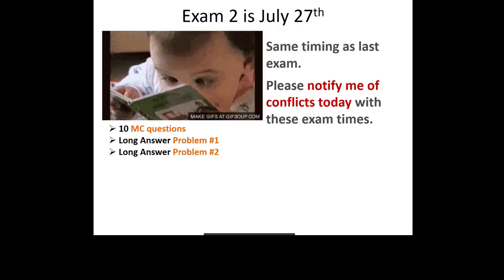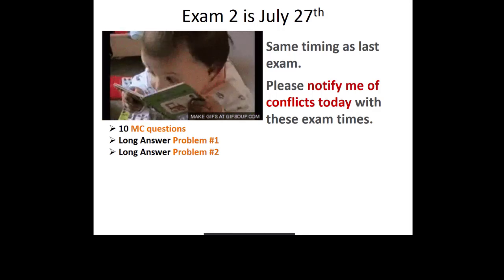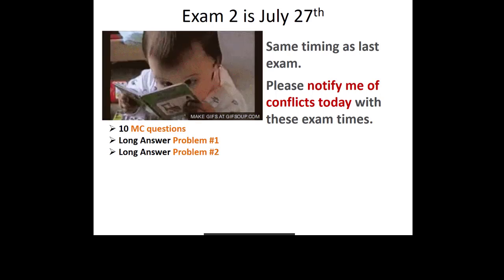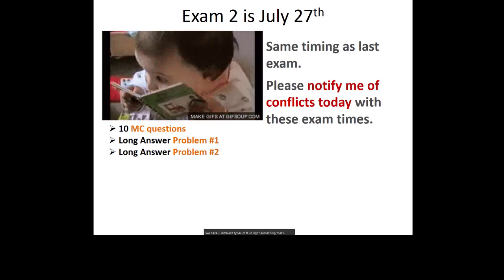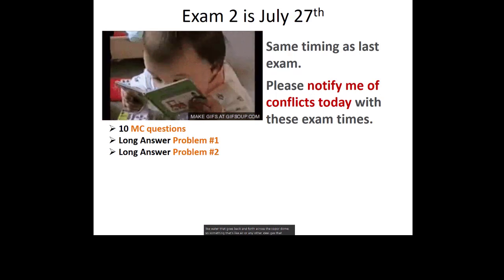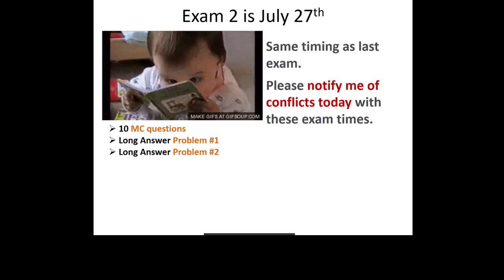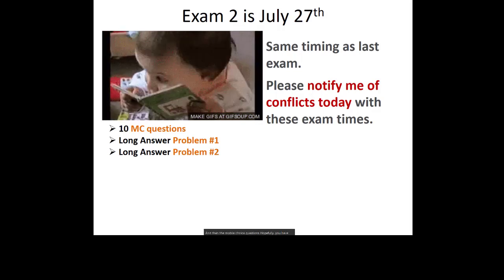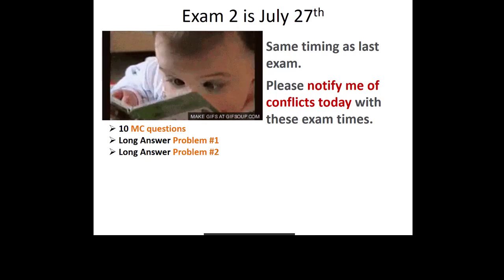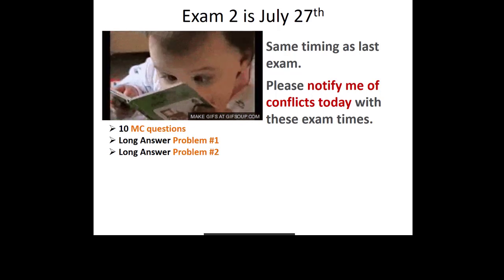There are two long answer problems. We have two different unit systems and two different types of fluid: something like water that goes back and forth across the vapor dome, and something like air or any ideal gas that doesn't. The multiple choice questions — hopefully you have a better idea what those look like now that we've done one exam.